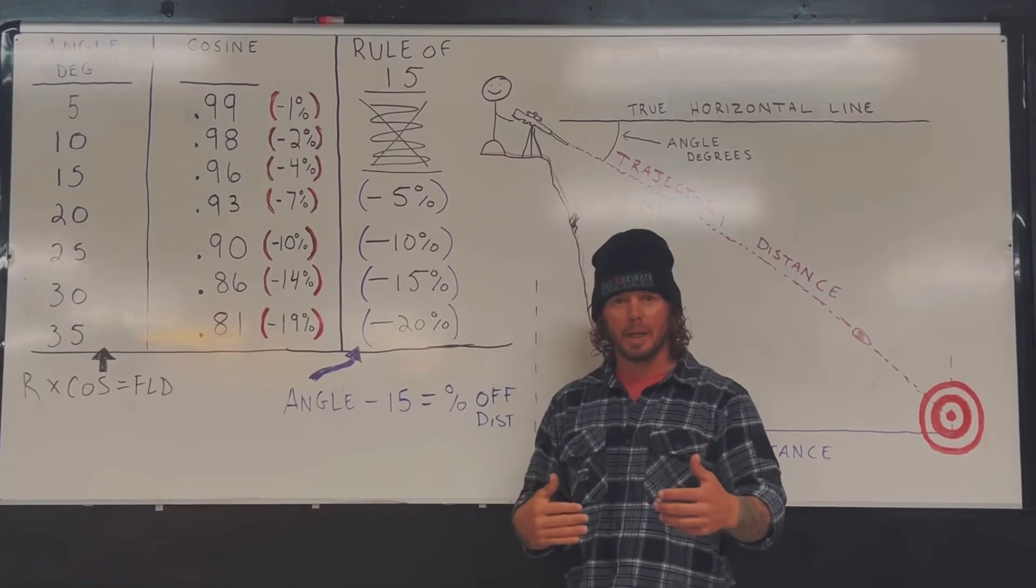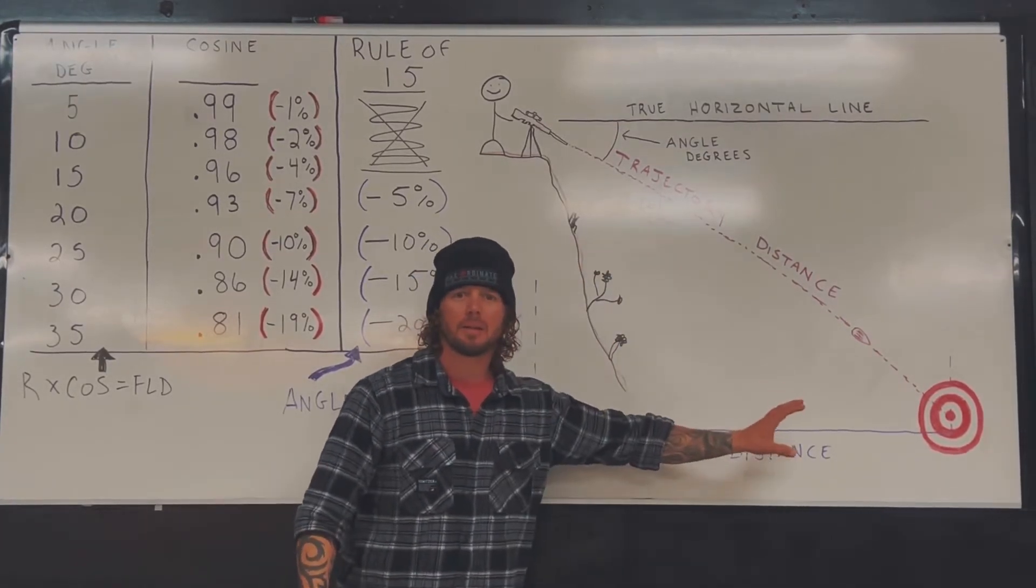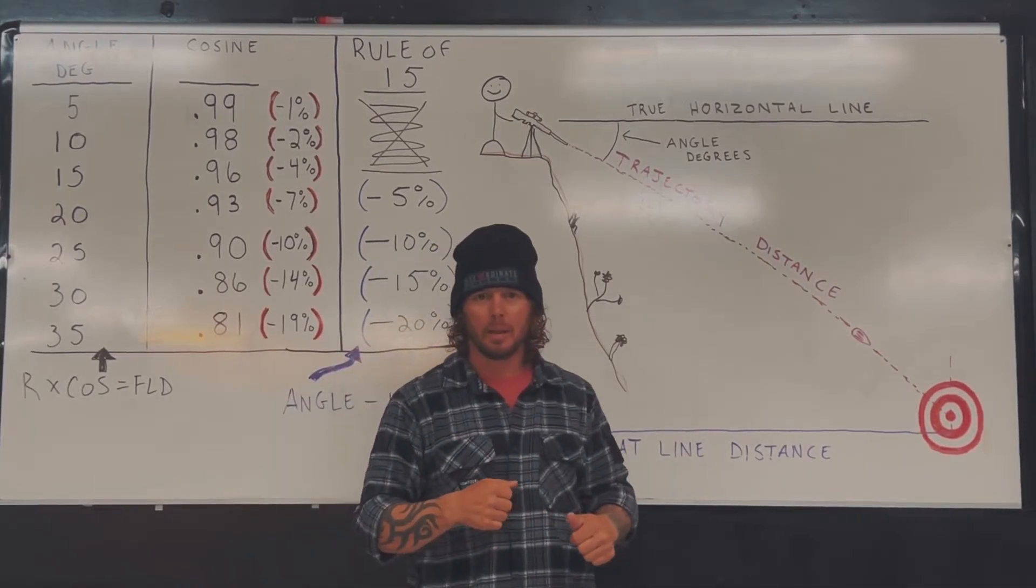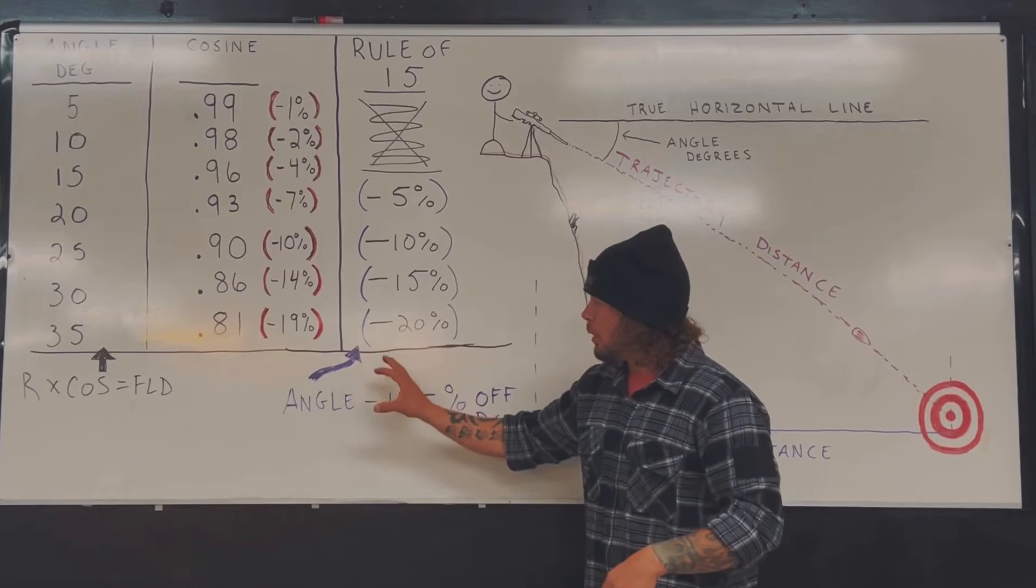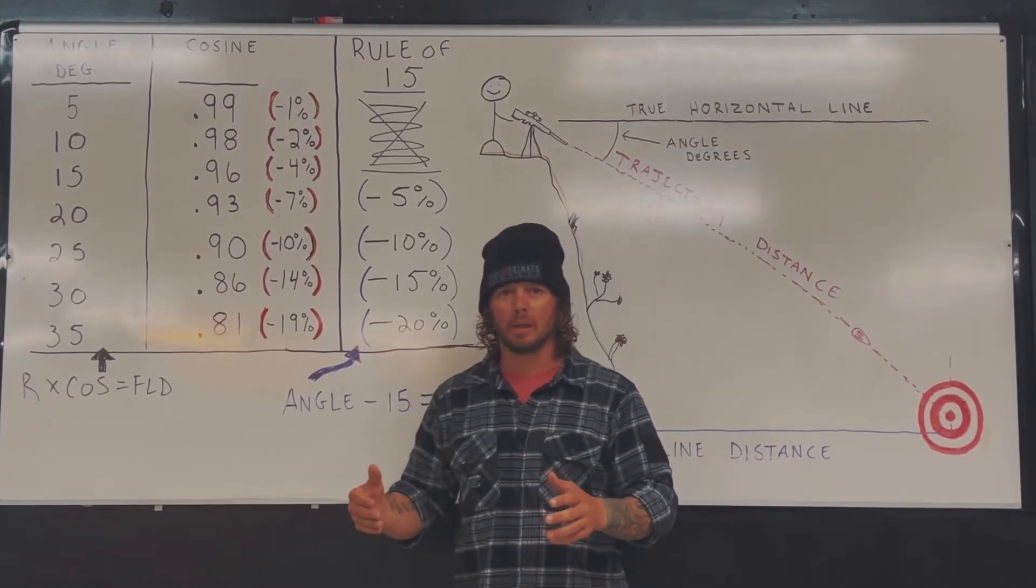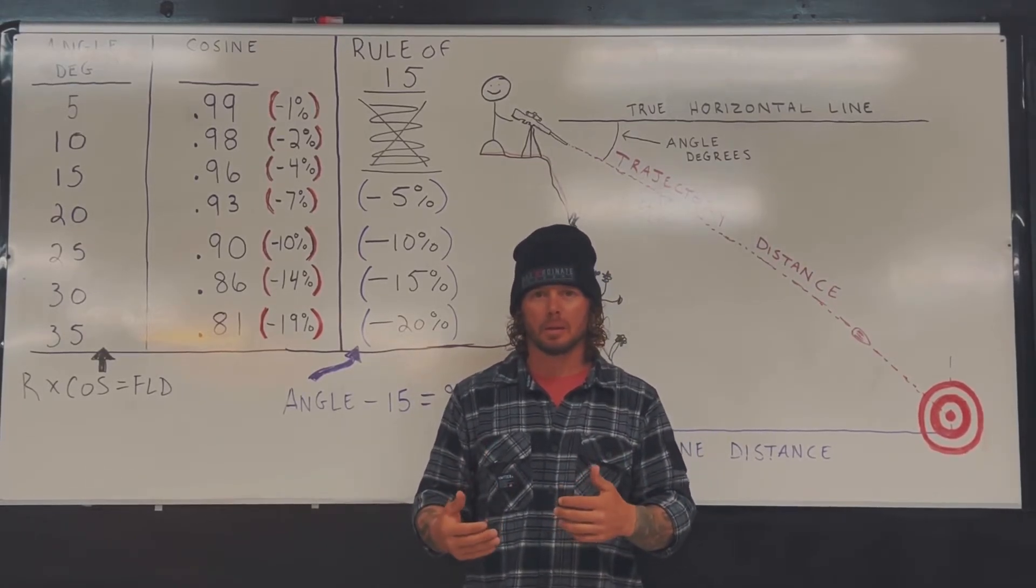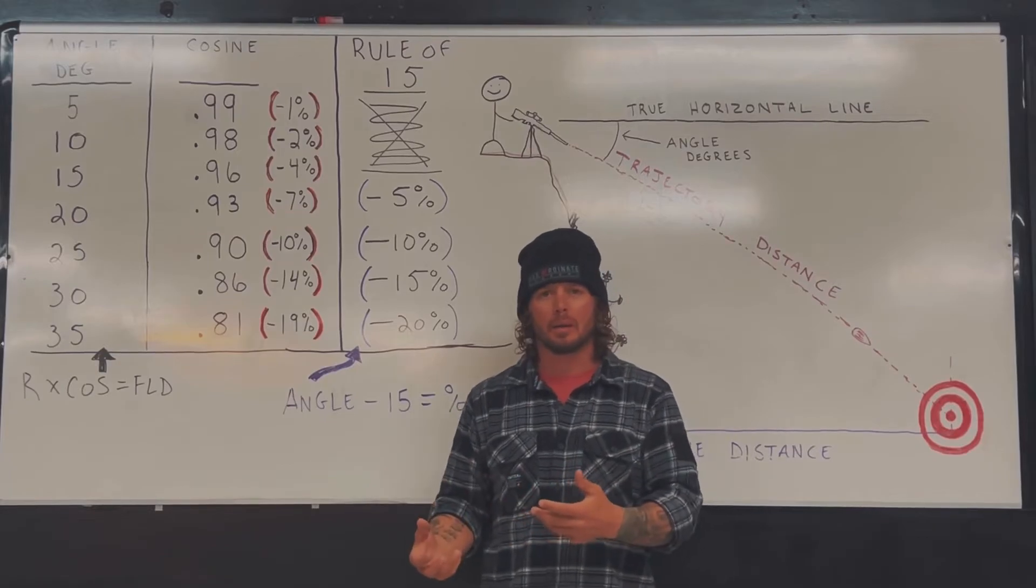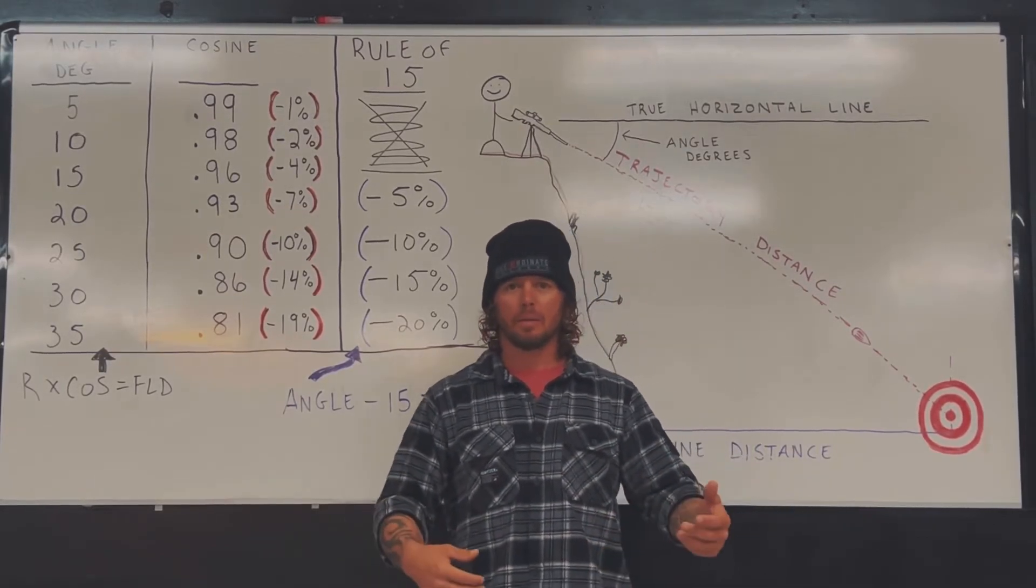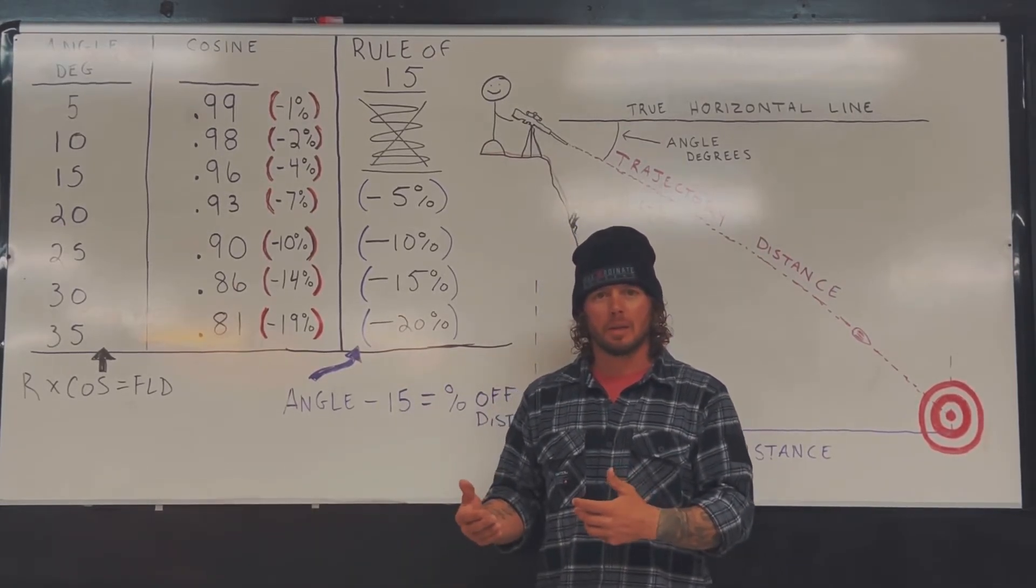You take 15% from your range and now you have your flat line distance, or the distance that you will dial on your scope or hold on your reticle to engage that target. This works all the way out to 60 degrees with a 1 to 2% margin of error, which is well inside the margin of error to engage targets with precision or accuracy, whatever your flavor is - whether it's hunting, military, law enforcement application, or a precision rifle competition. The effects are the same.